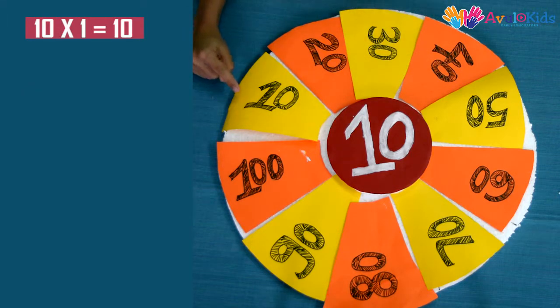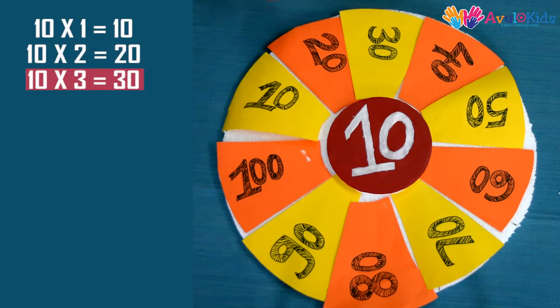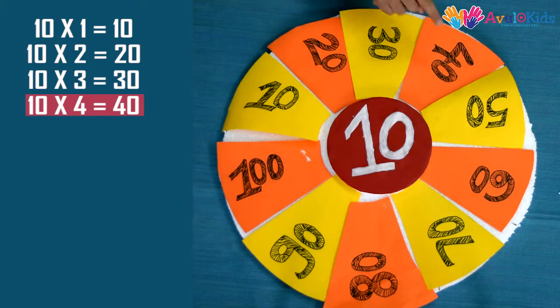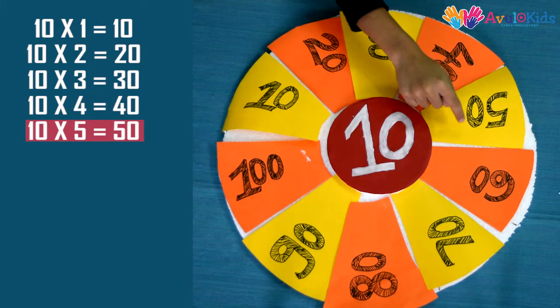10 ones are 10, 10 twos are 20, 10 threes are 30, and 10 fours are 40. 10 fives are 50.